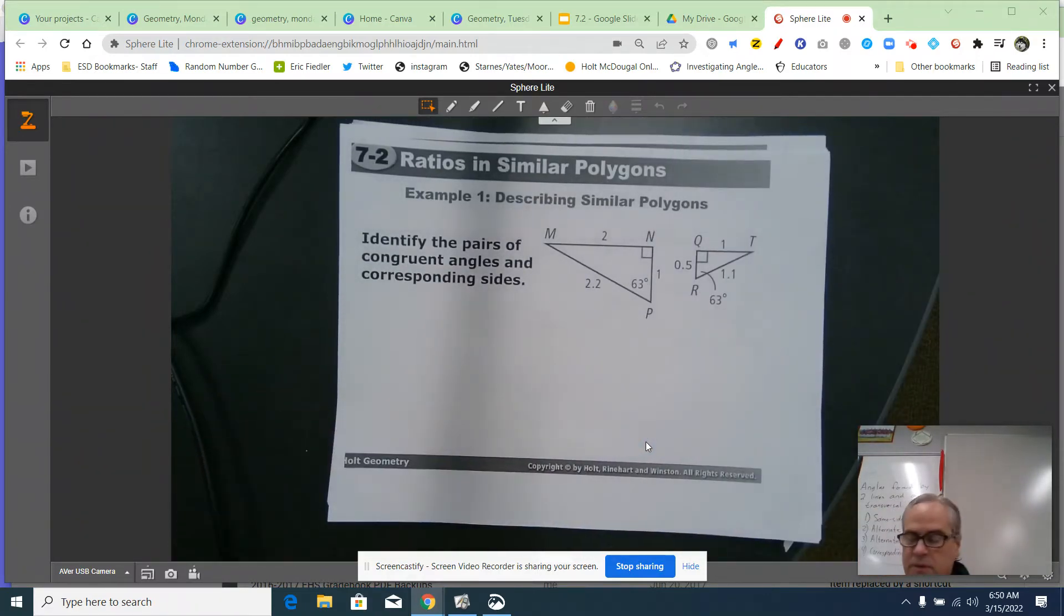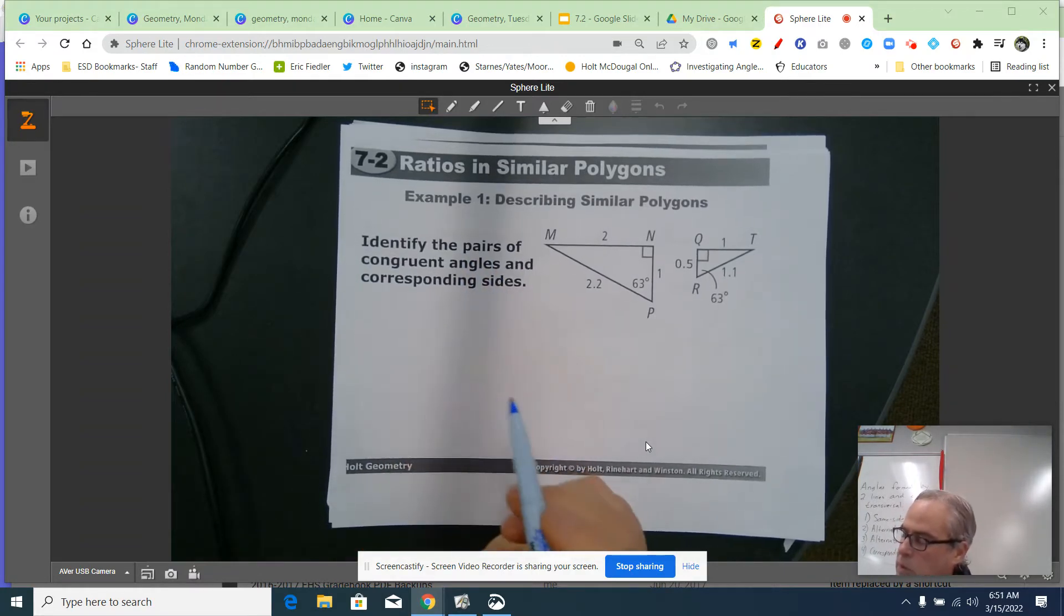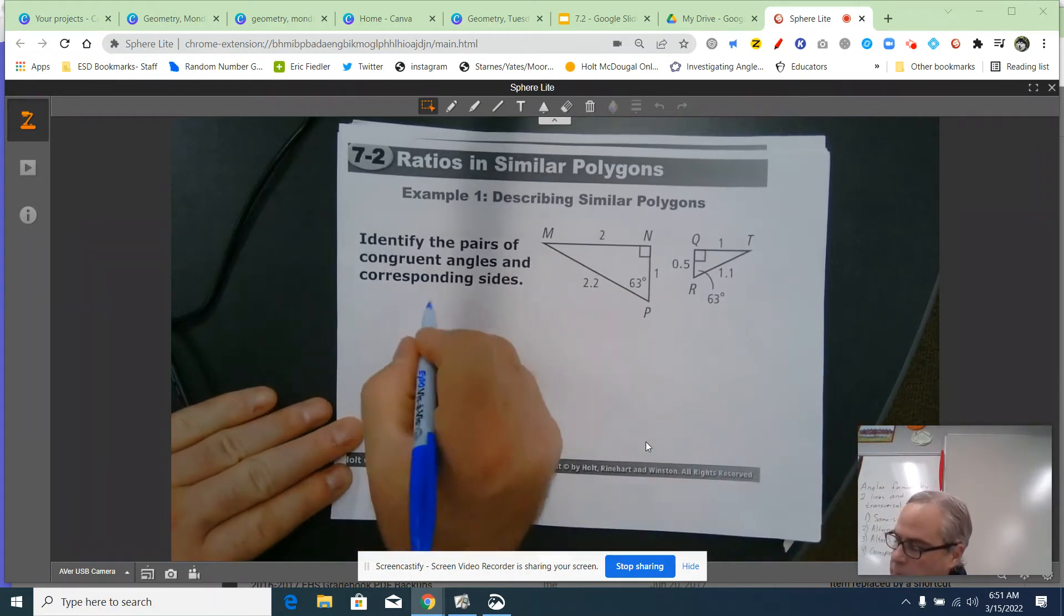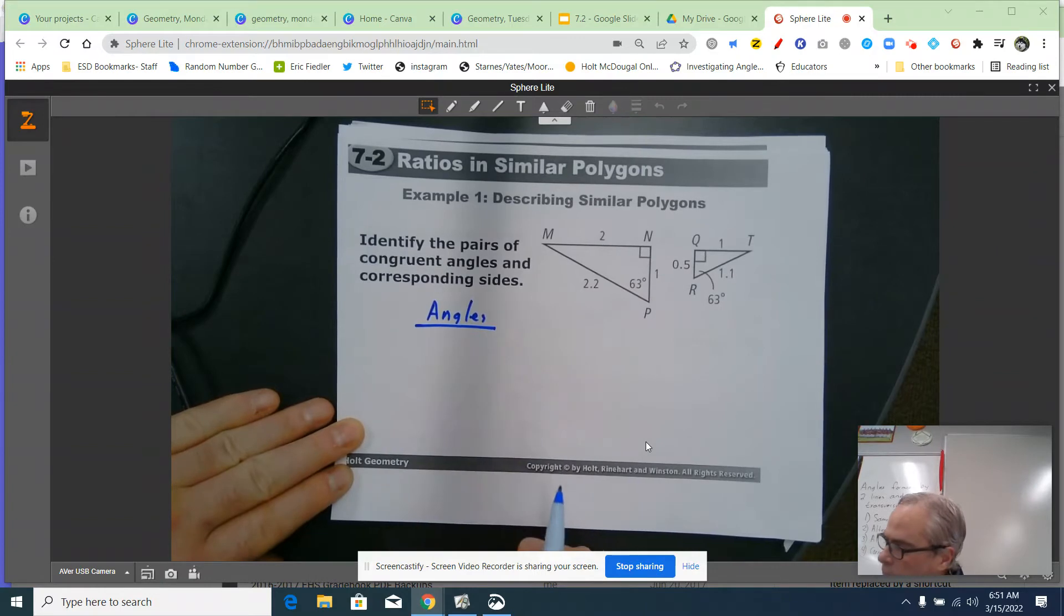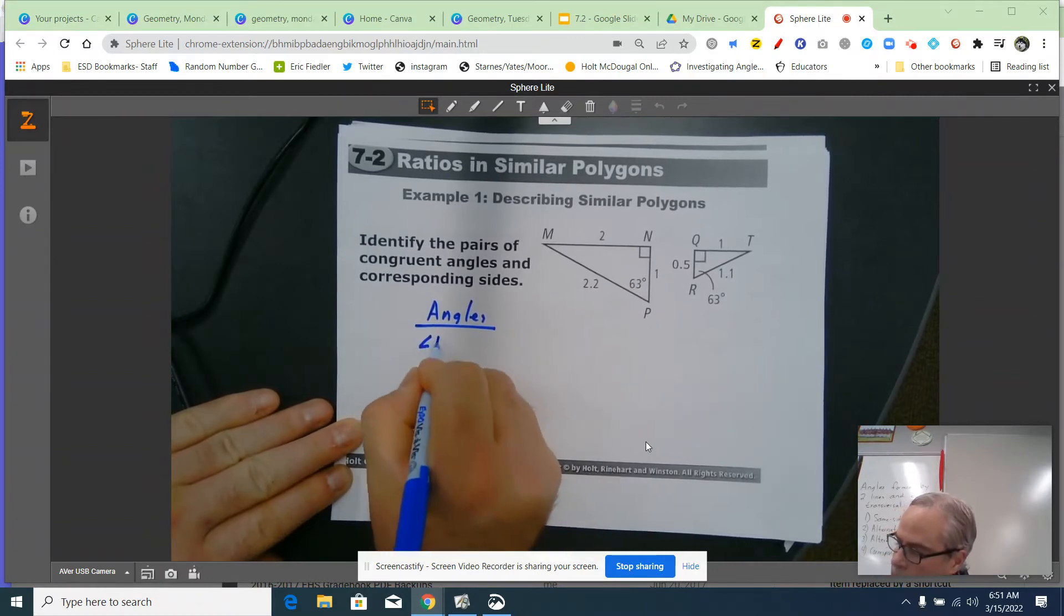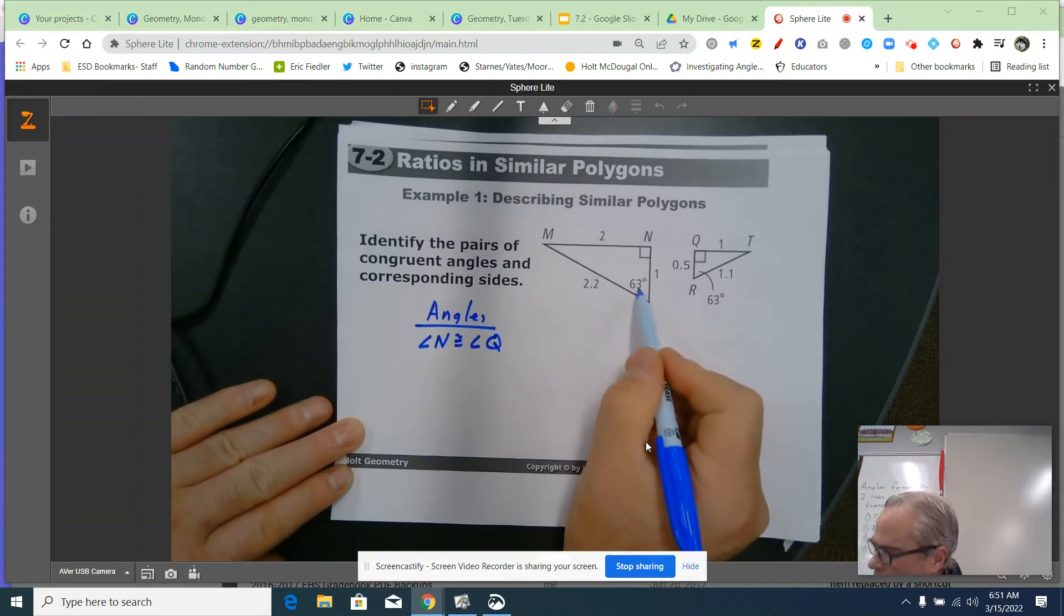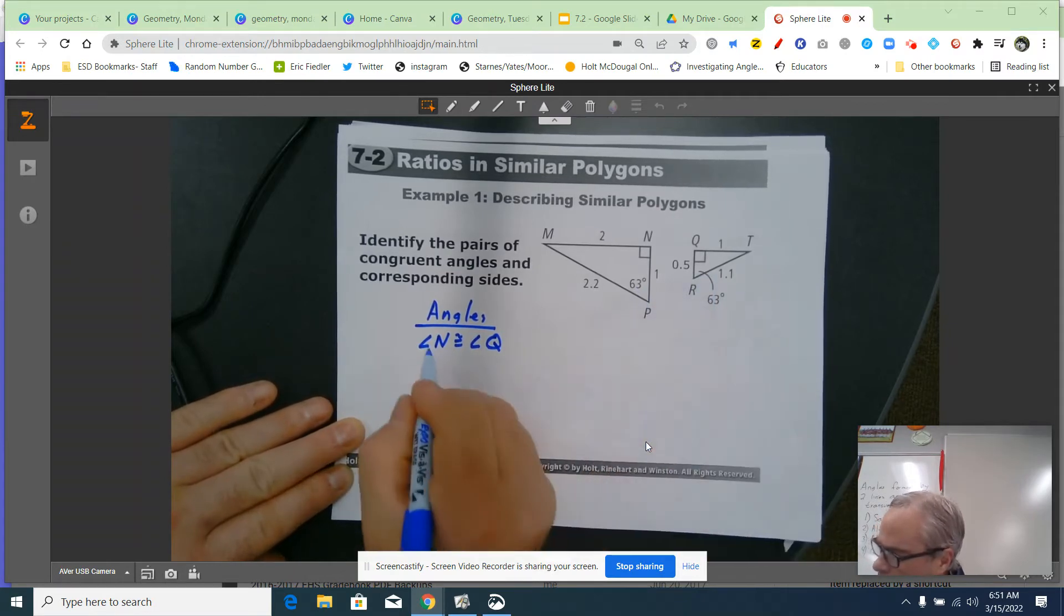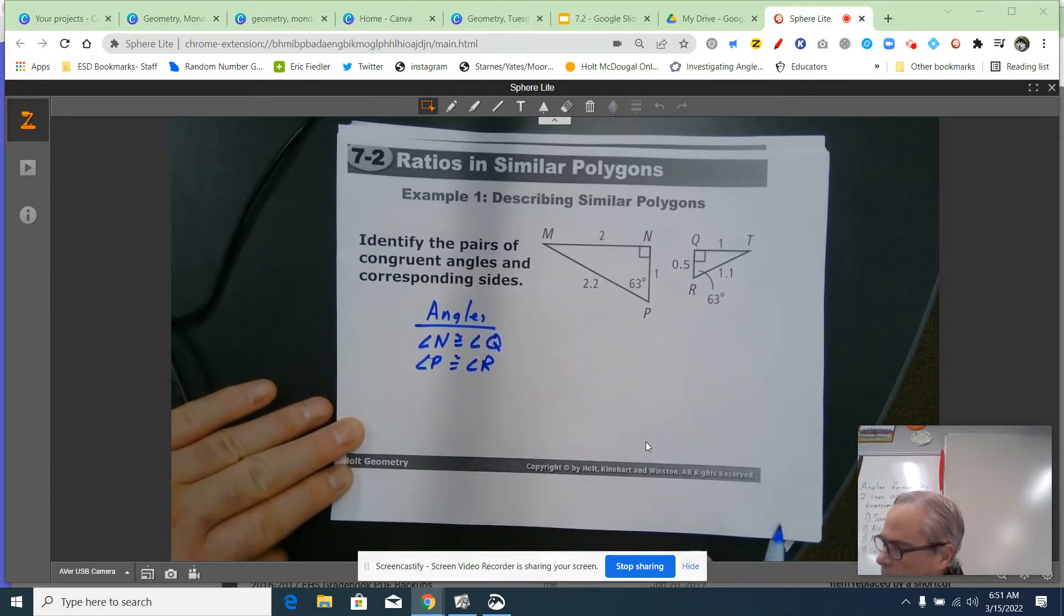Just a couple examples in this first video. It says, identify the pairs of congruent angles and corresponding sides of these two triangles. So I'm going to do angles first. This is how I want you to approach a question like this. So angle N is going to be congruent to angle Q. And remember, the angles have to be congruent, the same. This angle 63 over here, this angle 63. So angle P is congruent to angle R. And then the remaining angle, angle M and T, would have to be congruent.